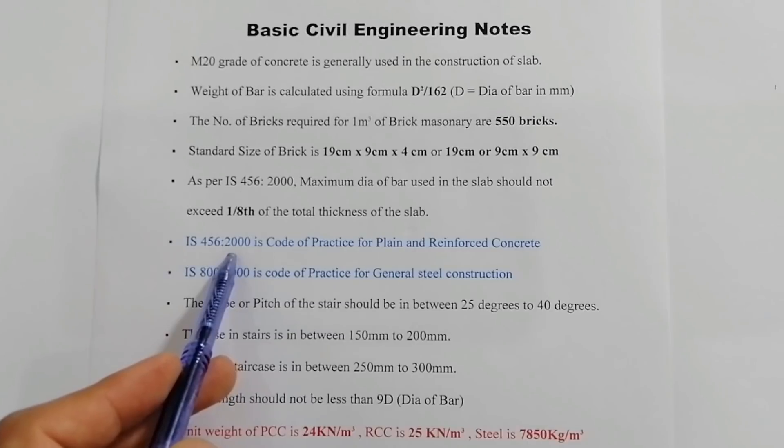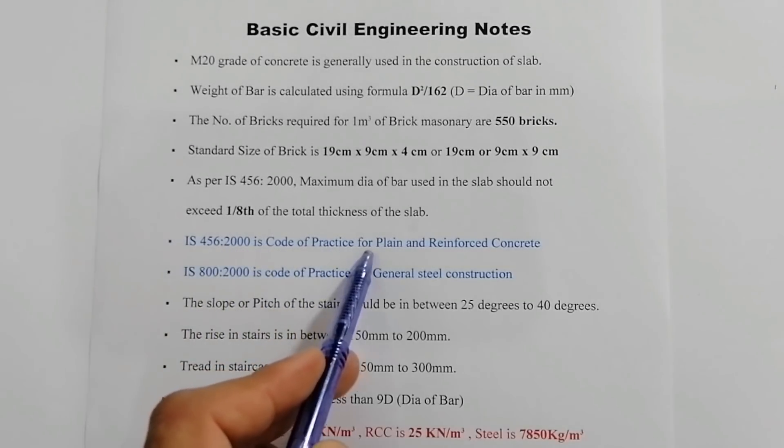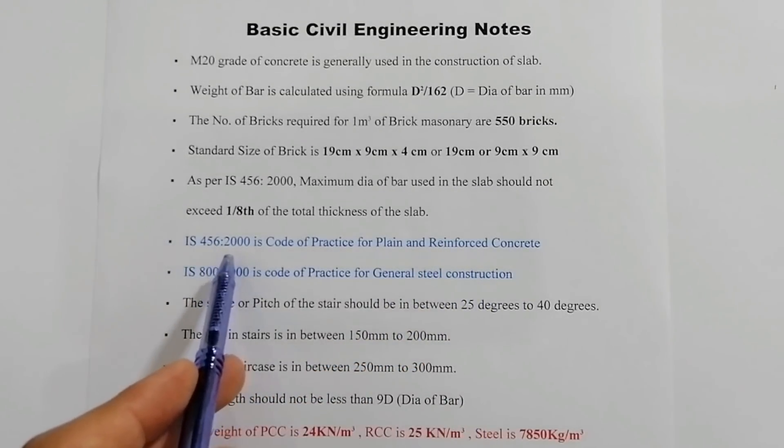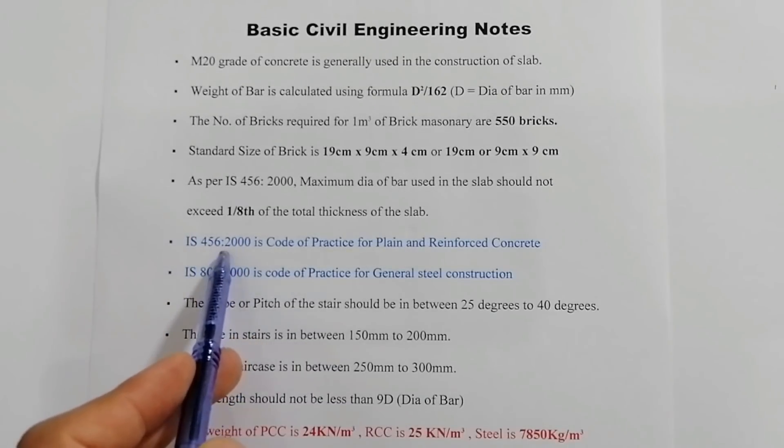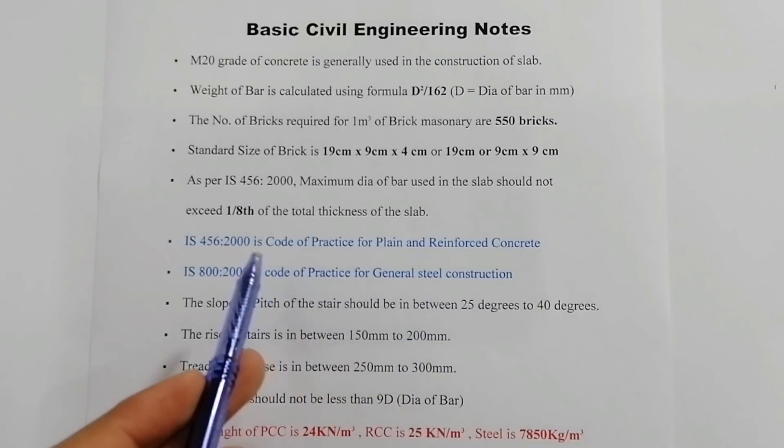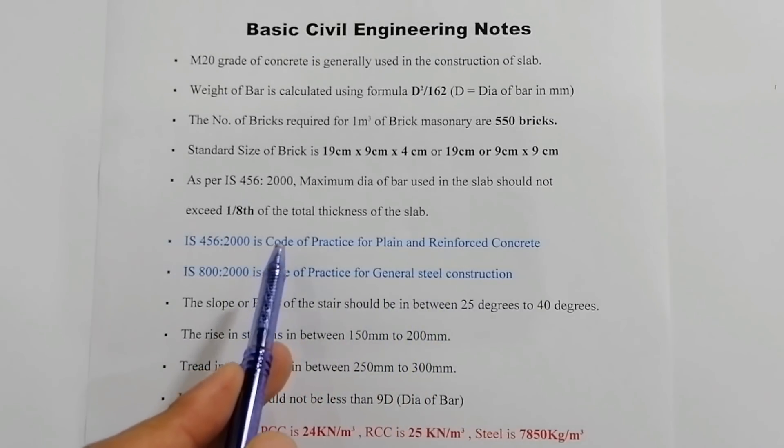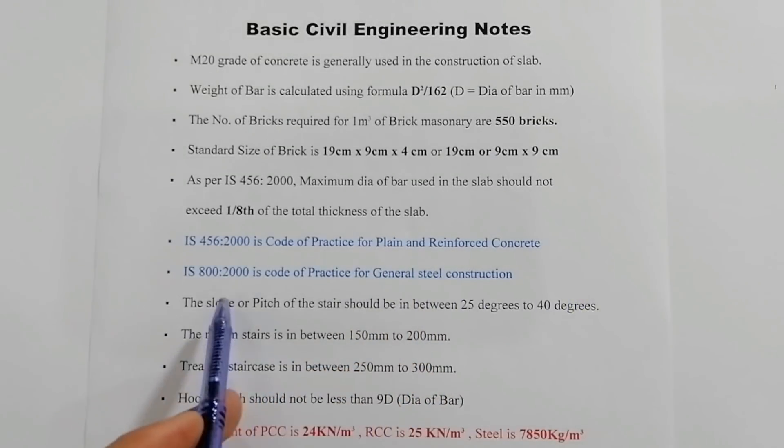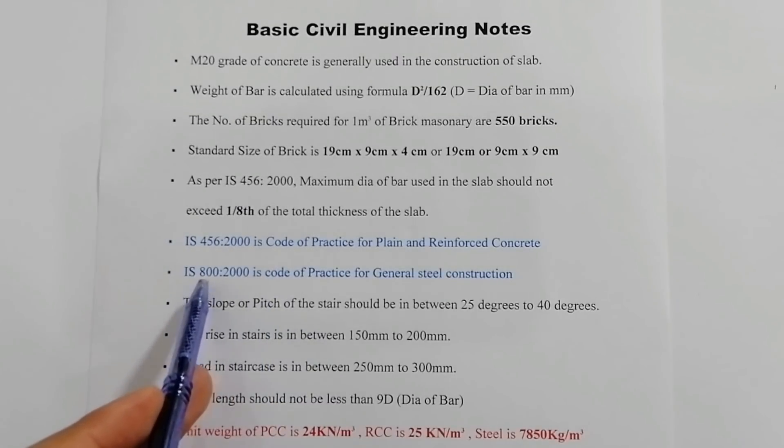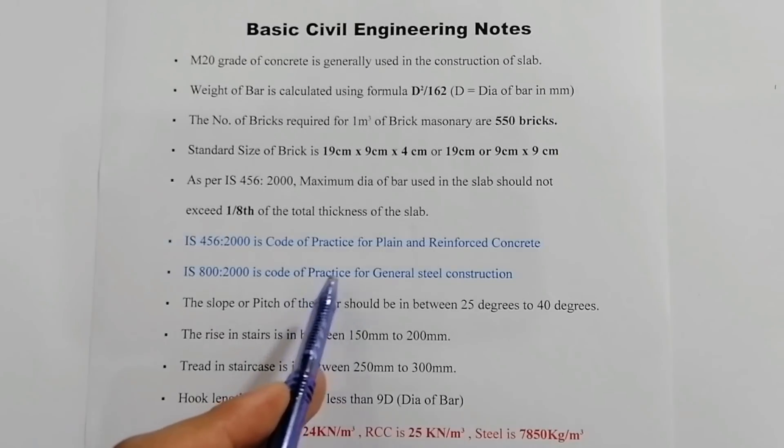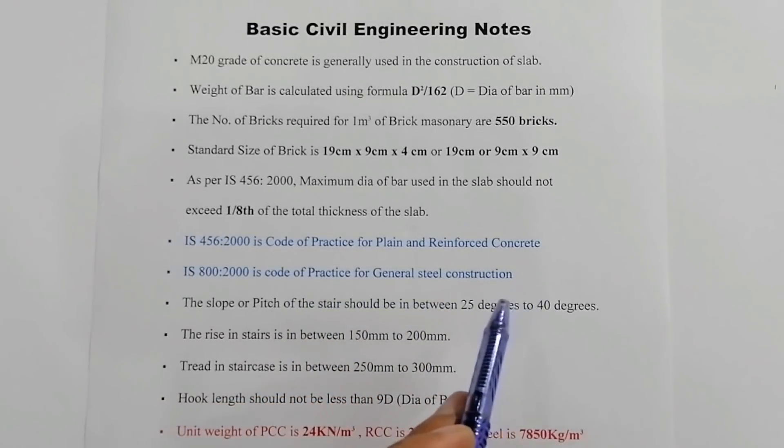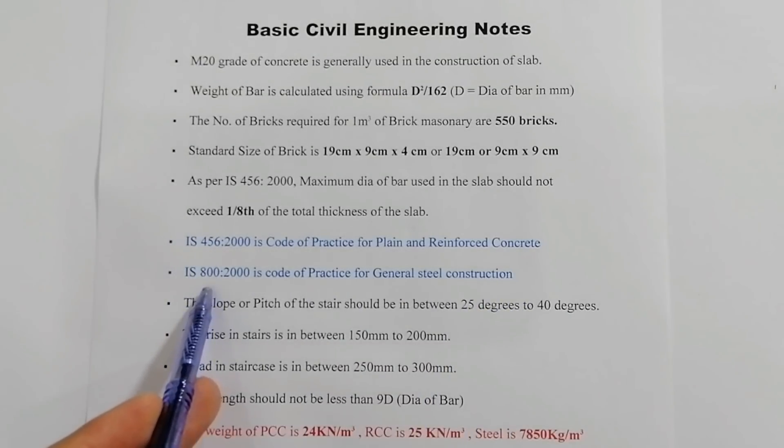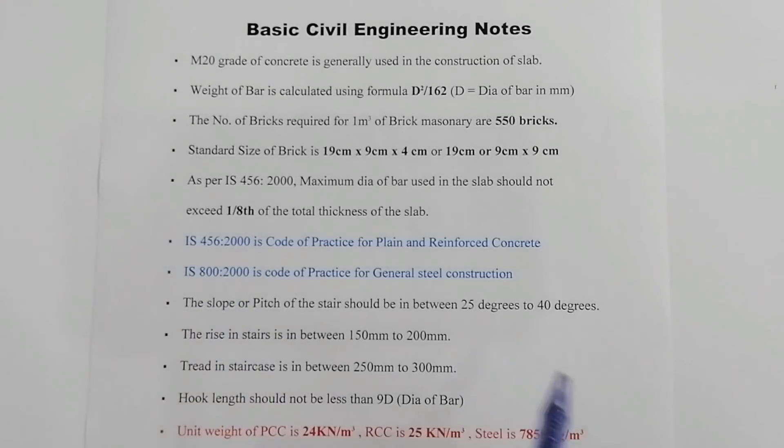IS 456:2000 code is used for the practice of plain and reinforced concrete. In this code you can learn about or check about code of practice for plain cement concrete and also for reinforced concrete. And IS 800:2000 code is practice for general steel construction. For general steel construction, if you want to know something, you can search IS 800:2000.